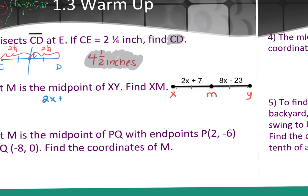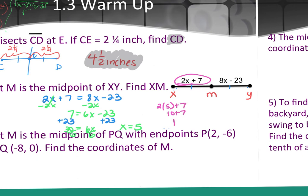Good. So 2x plus 7 would equal 8x minus 23. I'd subtract the 2x. I'd add the 23. I get 6x equals 30. Divide both sides by 6 and x is 5. Did the question ask for x? No. It's asking for XM. So what do I do with that? Plug it back in. So I'm going to plug it back in. And it doesn't matter which one you plug it back into because they should be the same. So 2 times 5 plus 7 would be 10 plus 7 or 17.